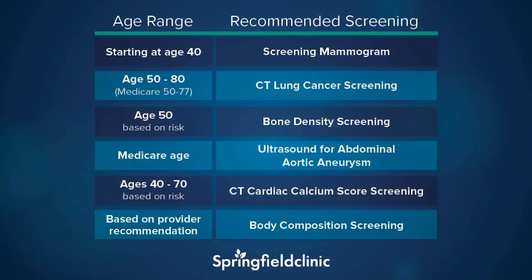What ages are appropriate for other types of preventative screenings? On the list you'll have access to via the link, about age 40 is when you start. Mammograms begin at 40, and for bone densities it is really based on risk, as well as CT coronary. CT lung screenings start at age 50 to 70, depending on your risks as well.